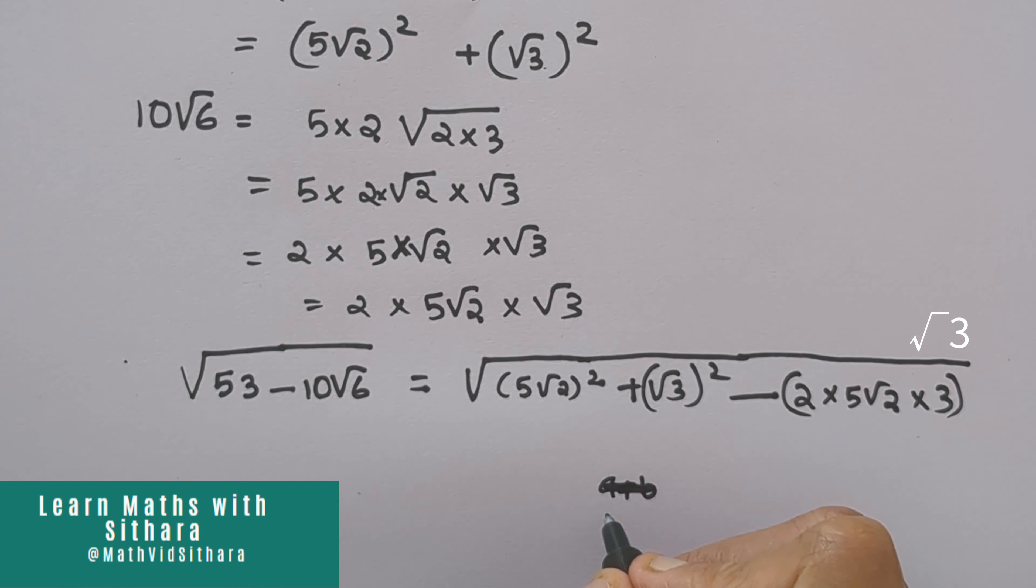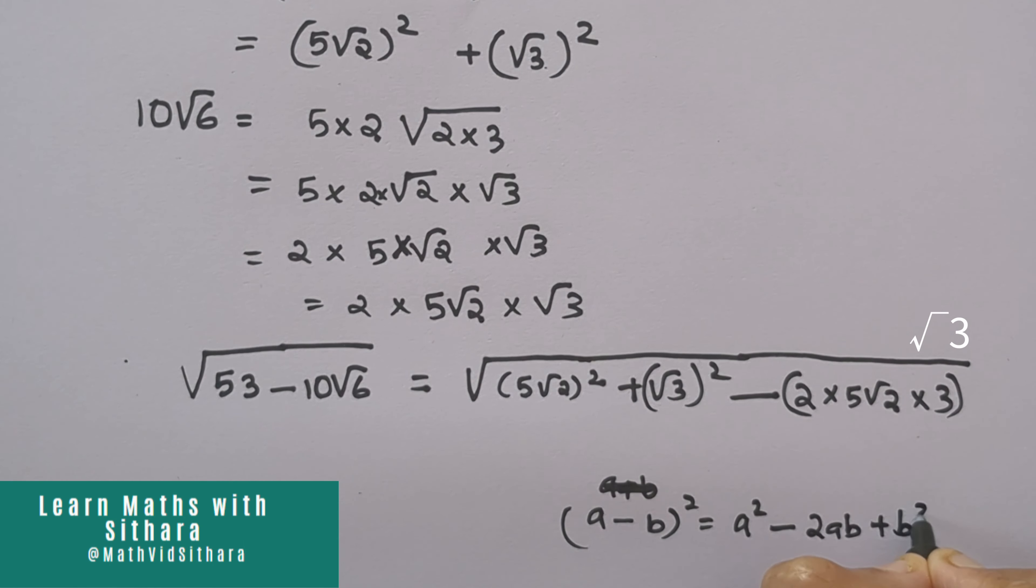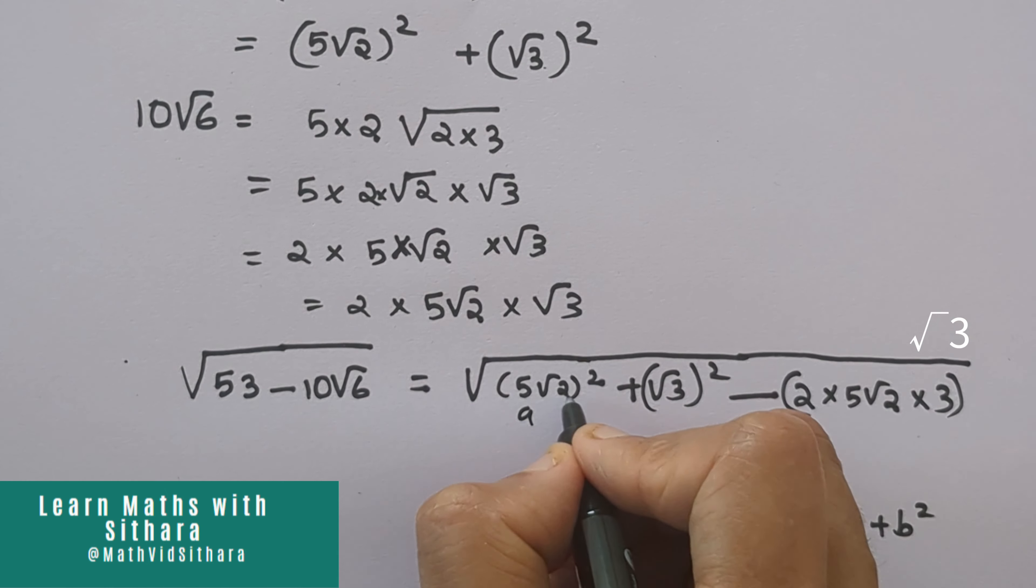We have a minus b the whole square equals a square minus 2ab plus b square. Here a is 5 root 2 and b is root 3.